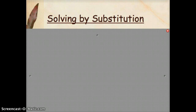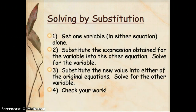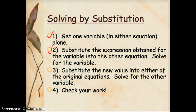This method is called substitution. Here are the steps: First, get one variable in either equation alone — in the last example, y was already alone, which made it easy. If it's not, you need to isolate one variable. Once you have that, substitute the expression you obtained into the other equation and solve for the variable. Then substitute the new value back into either original equation to solve for the other variable. Finally, always go back and check your work.